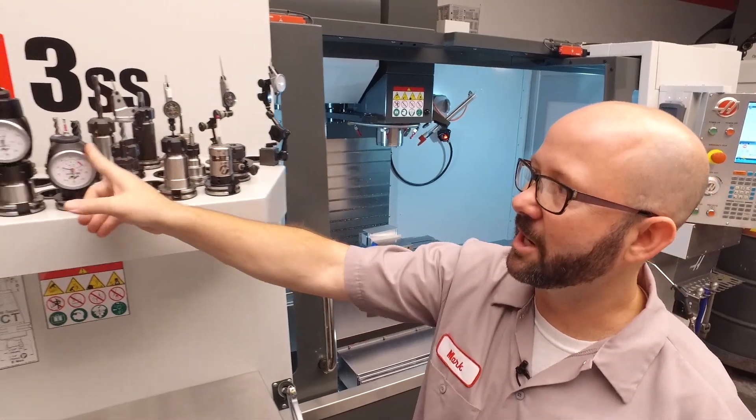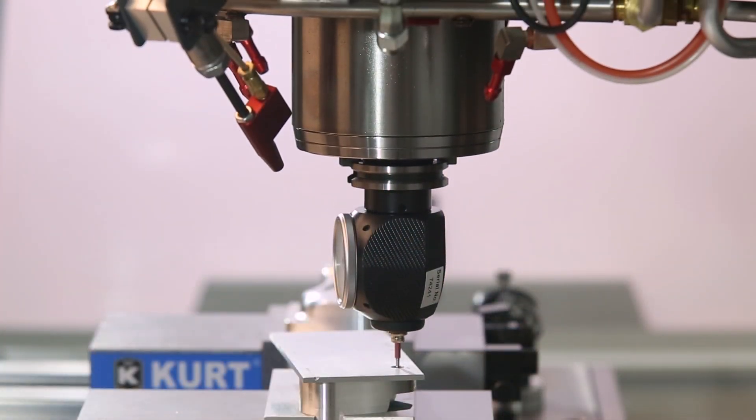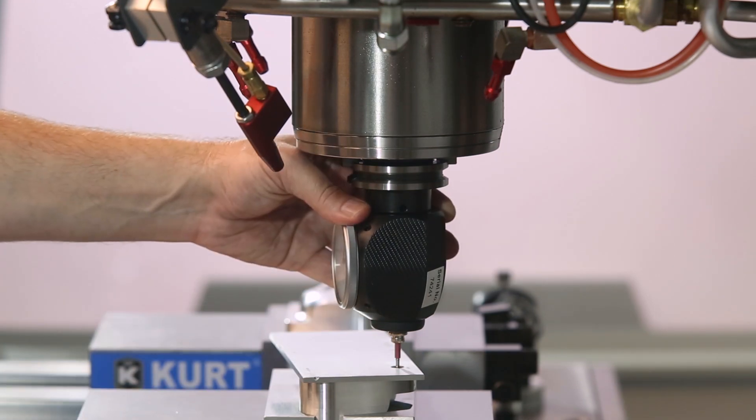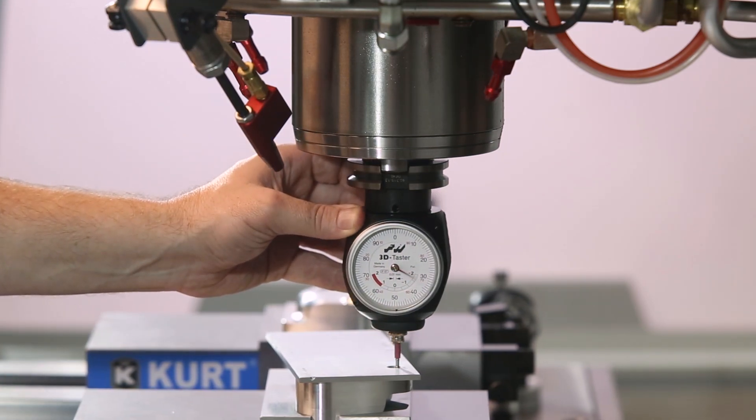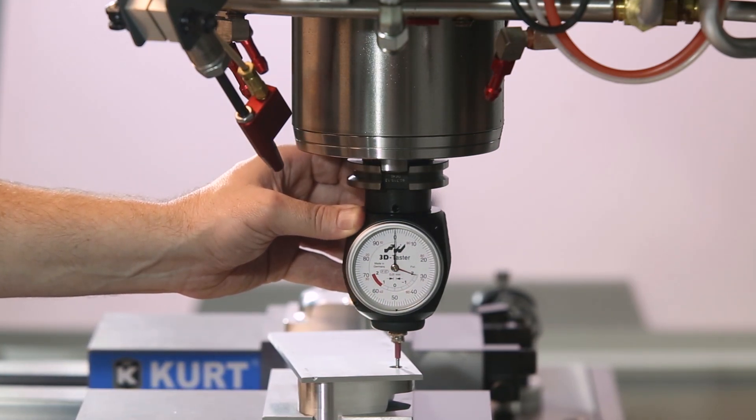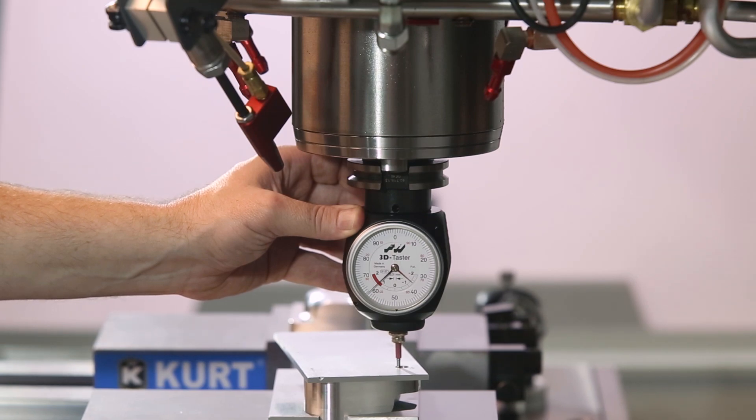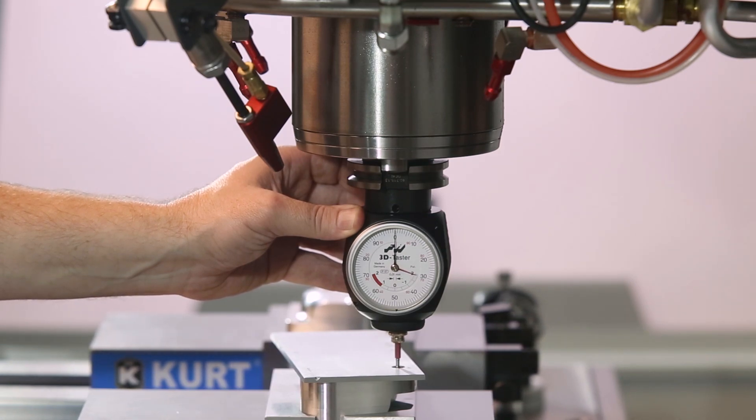So this indicator I've really liked lately. This is a 3D sensor. You can use this as an edge finder as well. Picks up things remarkably quickly, manually. You can also use this for picking up holes. You can find one edge, then the other, and split the difference.